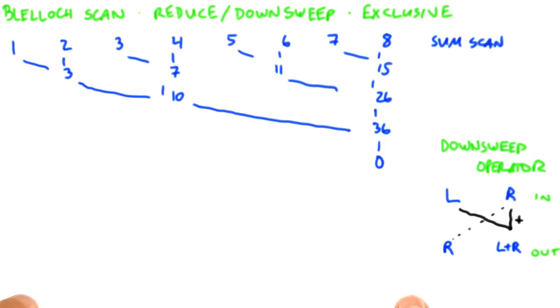But what's going to be different about down sweep are two things. The first one is that we're going to use a different operator. So each operator is going to take two inputs just as we did in reduction, a left input and a right input, but it's going to produce two outputs, not one. So the leftmost output is simply the right input copied to the left. The right output is equal to the sum, because we're doing sum scan, of the two inputs.